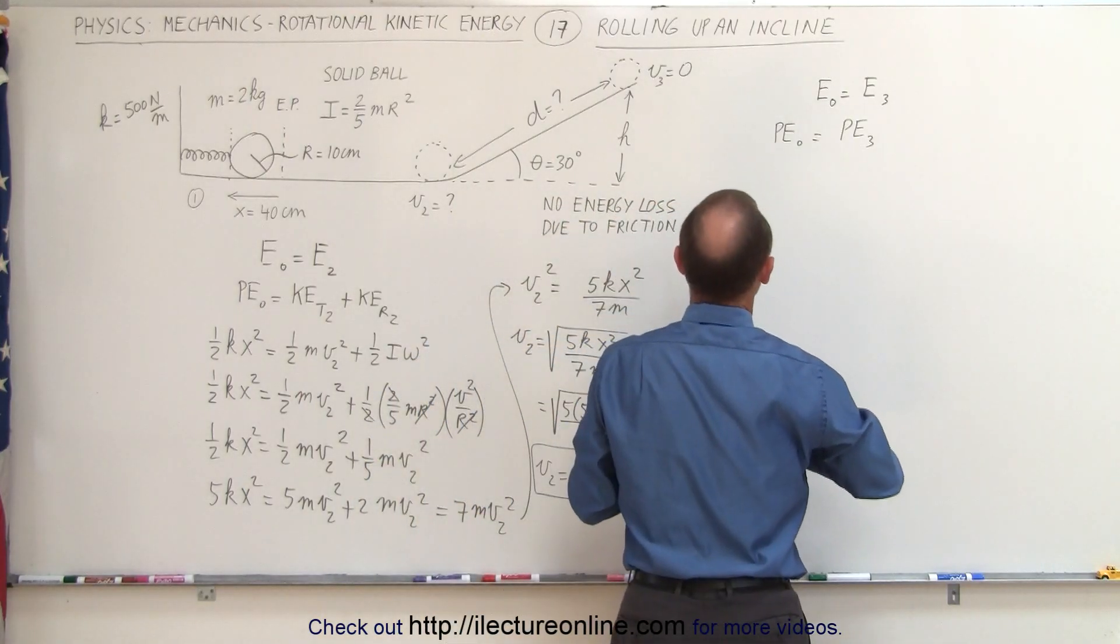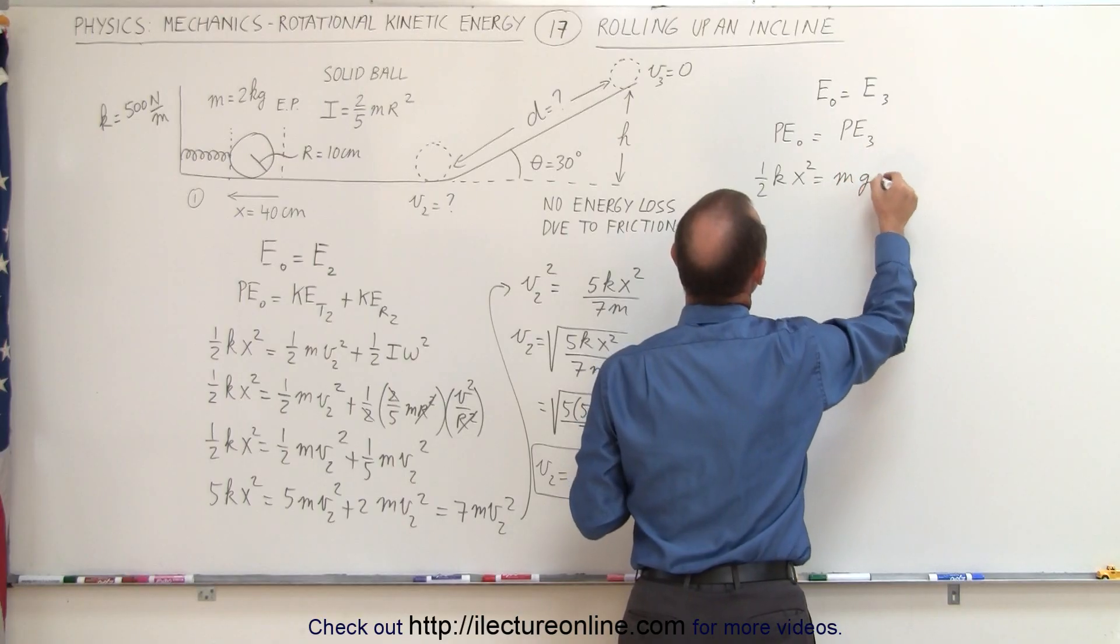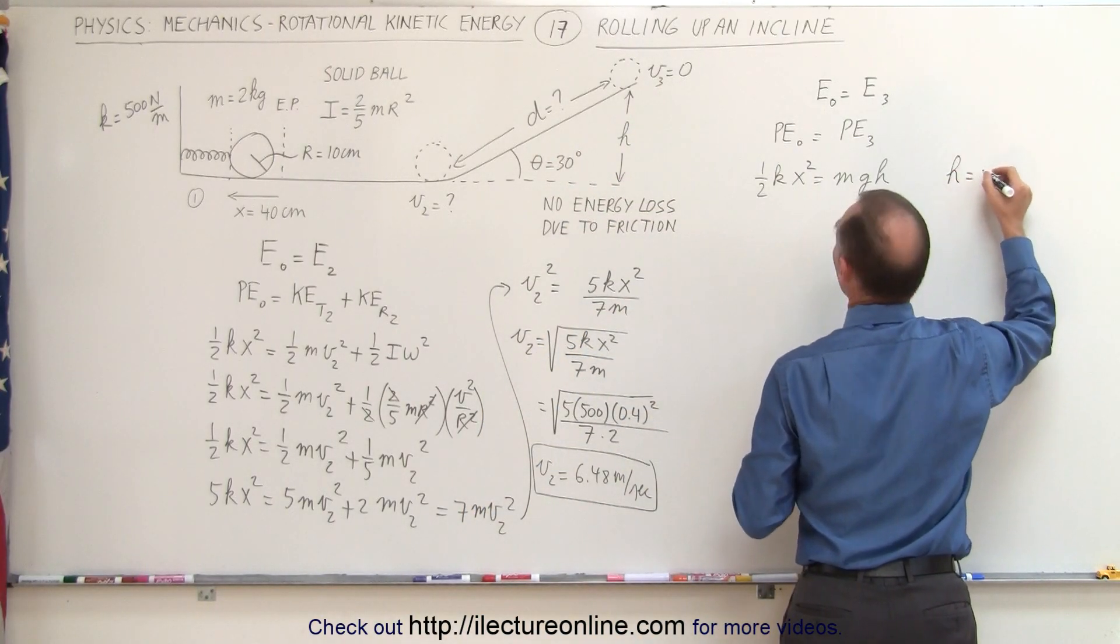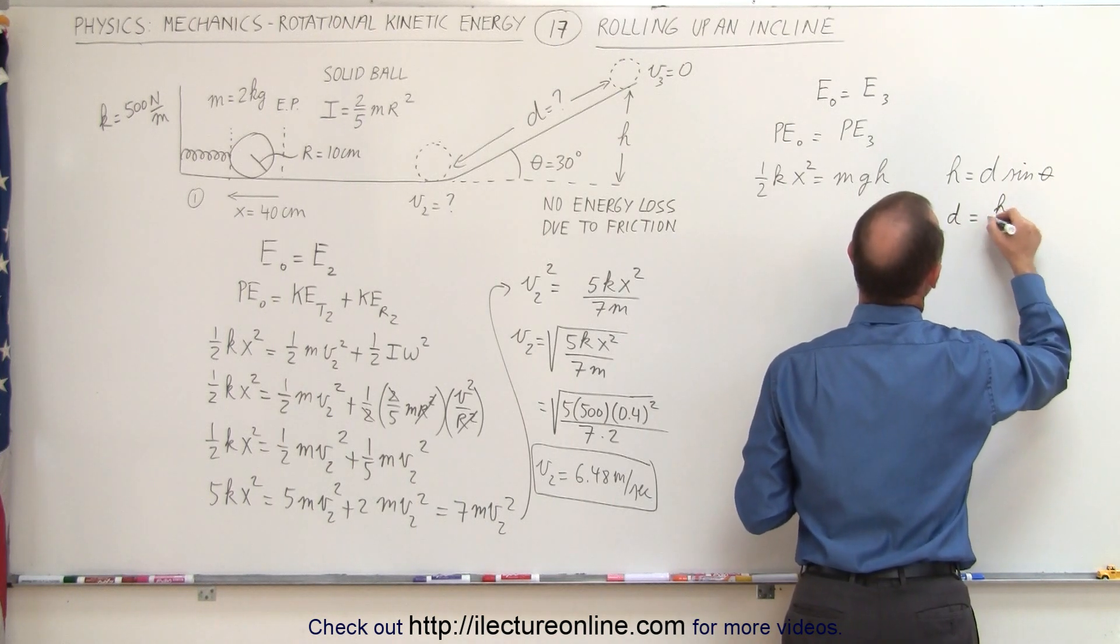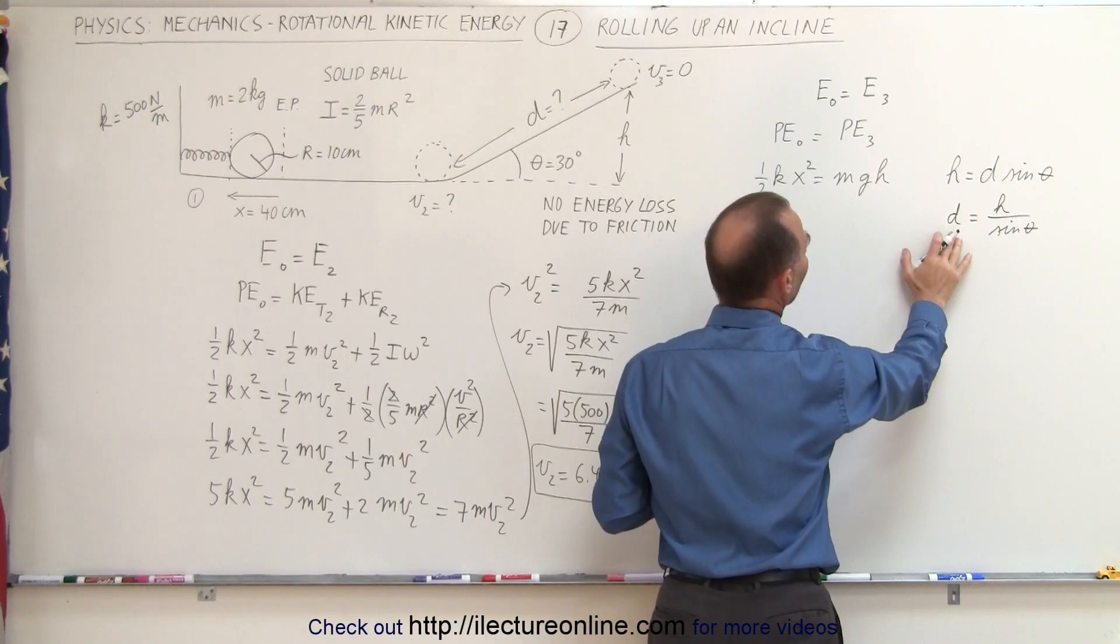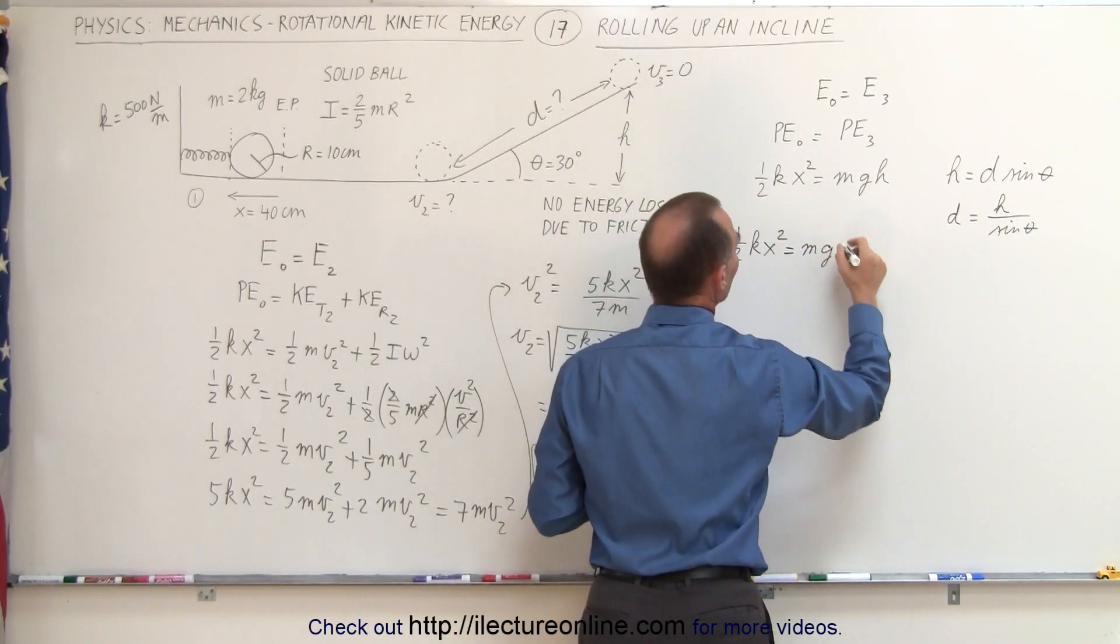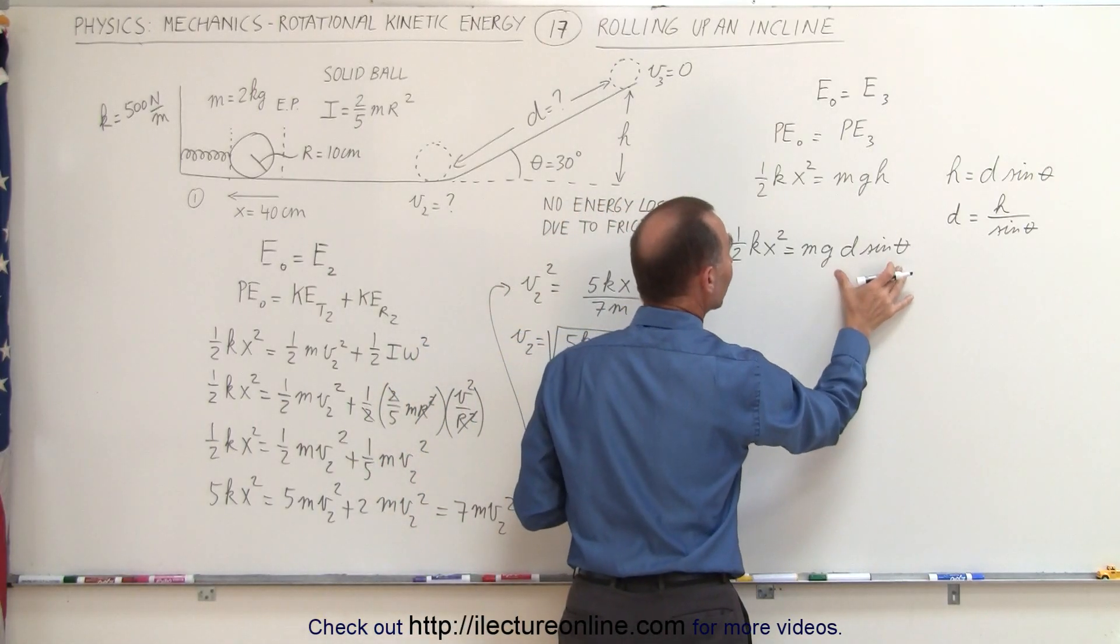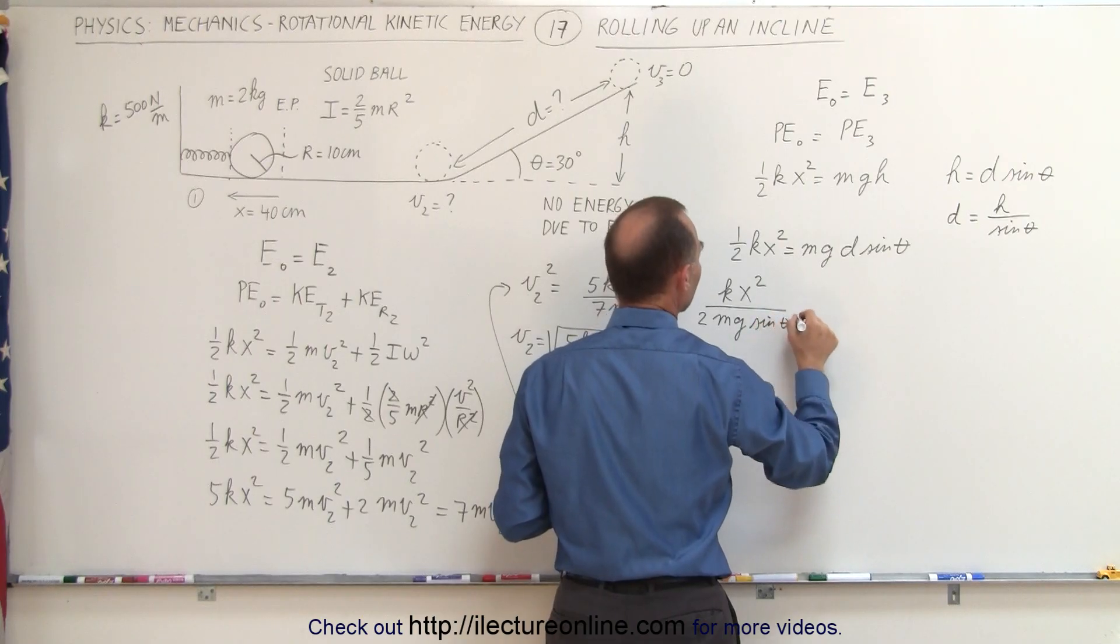We can say that the initial potential energy, which is 1/2 kx², must equal the potential energy at the end, which is therefore equal to mgh. Now converting this to d, notice the triangle, h is the opposite side to the angle. That means that h equals the hypotenuse d times the sine of 30 degrees, the sine of theta. In other words, d equals h divided by the sine of theta. So instead of writing mgh, since we want things in terms of d, we're going to write it as 1/2 kx² equals mg times h, which is d sine theta, and we're trying to solve this equation for d. That means we're going to divide both sides by mg times sine of theta. So we have kx² divided by 2mg sine theta equals d.